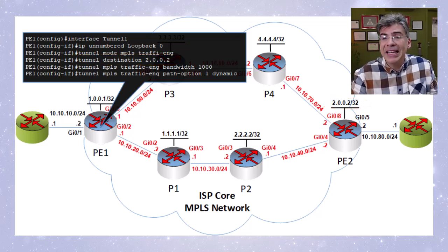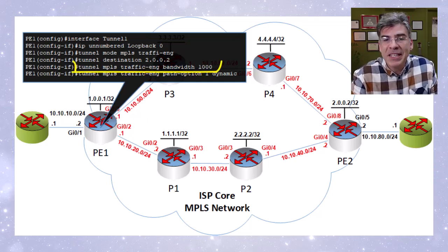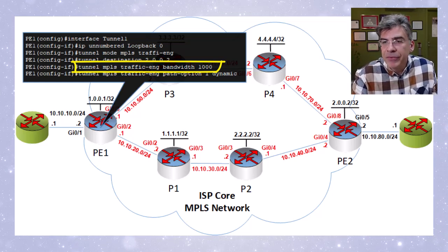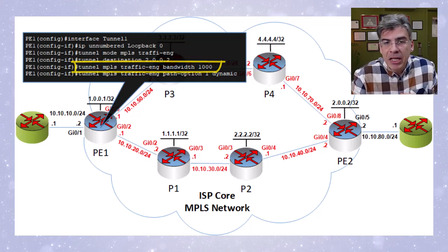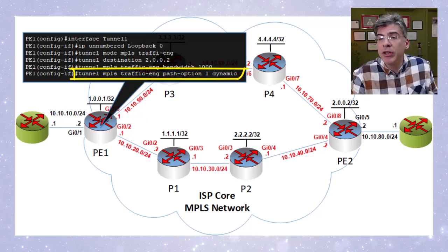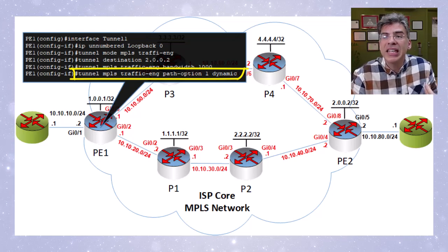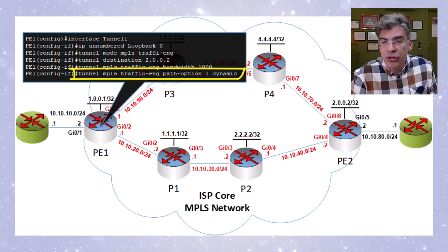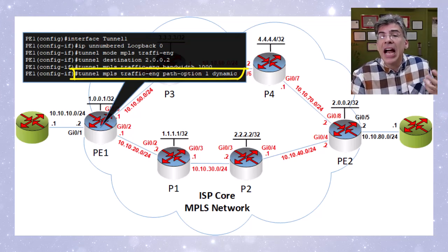We have a couple more commands specifying the characteristics of the tunnel. First, we specify the maximum bandwidth the tunnel will carry in kbps — we've set that to 1000 kbps or 1 Mbps. The final command tells the router to use CSPF (Constraint Shortest Path First) as the algorithm to dynamically calculate the best path to the destination, based on the underlying OSPF topology using the relevant TE constraints discussed in previous videos. And that's it — we've created our tunnel.